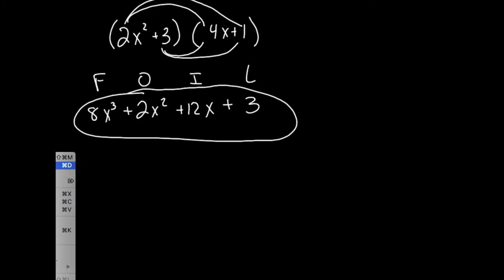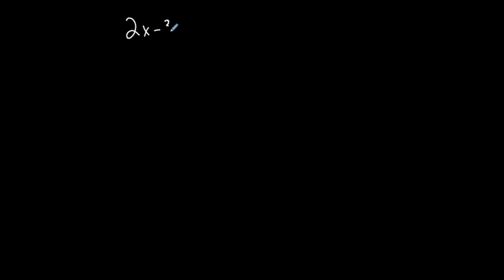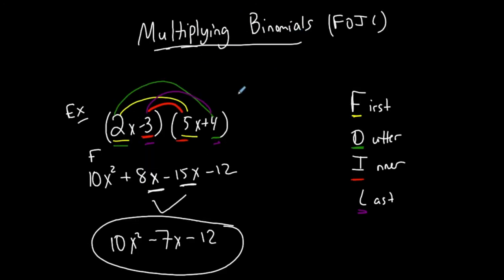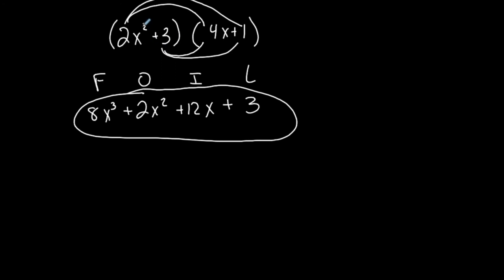FOIL only applies when multiplying two binomials. So what if I need to multiply a binomial and a trinomial? It doesn't follow the monomial distribution case, and I can't use FOIL because I don't have two binomials.